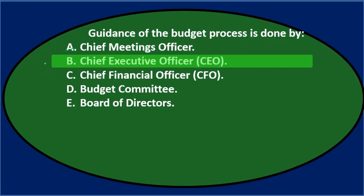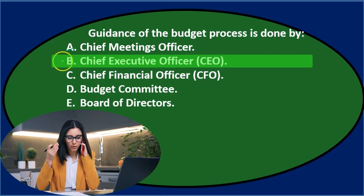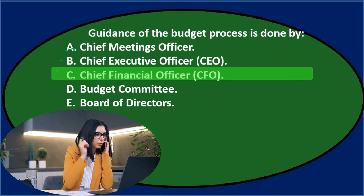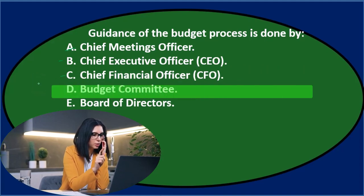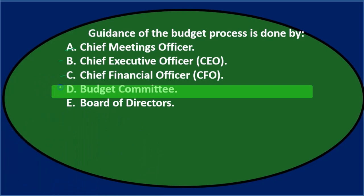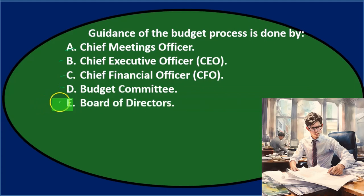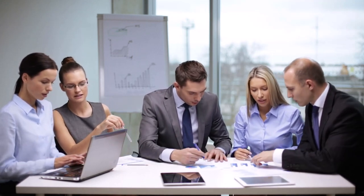B says Chief Executive Officer. Well, if the budget is really important, maybe that seems familiar. C says Chief Financial Officer — it's a financial type thing, so maybe that would be it. D says Budget Committee — that sounds familiar, I think we've dealt with something called the Budget Committee, so I'll keep that. And E, the Board of Directors, also sounds pretty important. So all four of these sound like big people in the organization, and the budget is a big planning process and goal, so we might need to narrow that down.